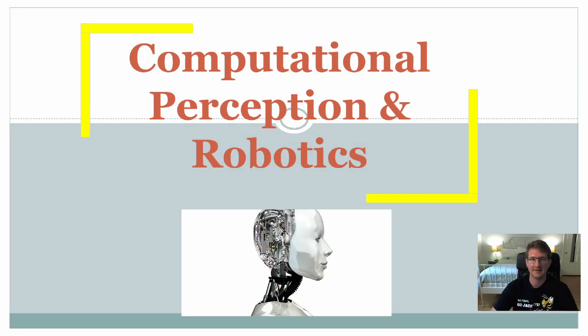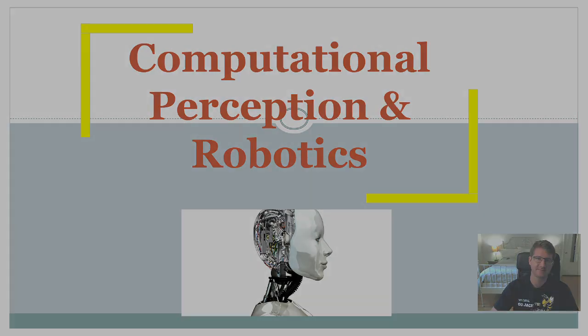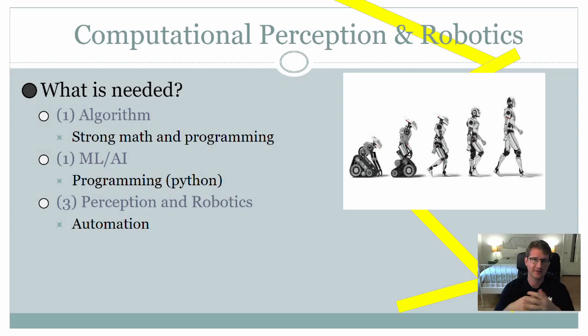Let's take a look at Computational Perceptions and Robotics. You should be able to tell Computational Perception and Robotics deals mostly with robotics and robotic systems. In the masters, for the program, you have to have a set of core classes and then a set of specialization classes.